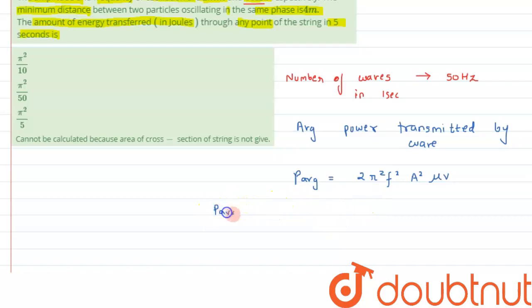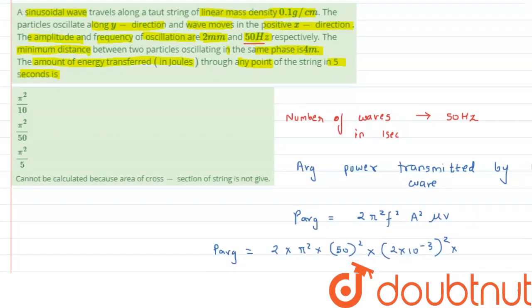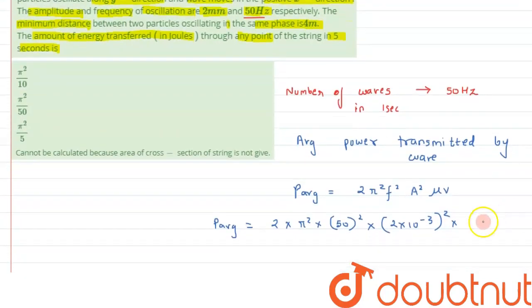We can write P average equals 2 × π² × F has been given as 50 Hz, so we can write it as 50² × amplitude has been given as 2 mm that is 2 × 10⁻³ square × μ has been given as 0.1 gram per centimeter, we can convert it into kg per meter, so it comes out to be 0.01 × velocity.